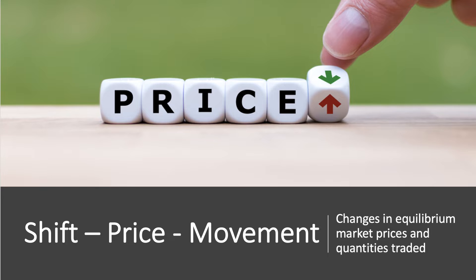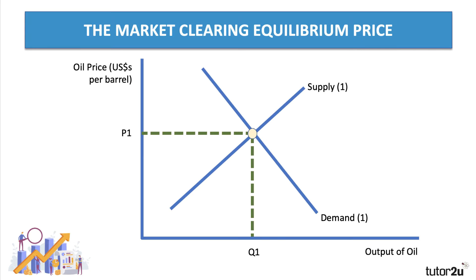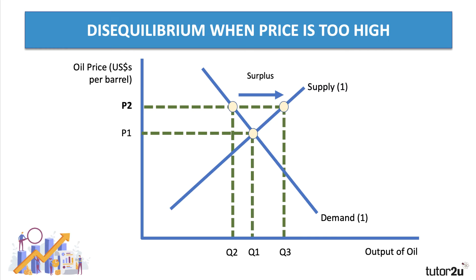We'll take two examples in this session. Our go-to example is the market for oil. The supply of oil comes from major crude oil extracting countries and companies, and the demand for oil is derived from its many uses, including transport, manufacturing processes, and heating and energy provision. So there's an equilibrium price in the market — the market clearing price in this situation is P1. If the price was P2, above equilibrium, we tend to end up with a surplus of supply over demand.